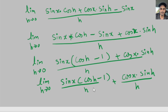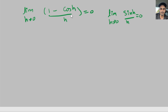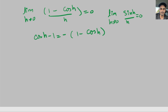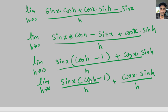Now here we have cosine of h minus 1 over h, and our known property uses 1 minus cosine of h over h. We can do a little manipulation: cosine of h minus 1 equals negative of (1 minus cosine of h). So we can go ahead and plug in negative (1 minus cosine of h) here.